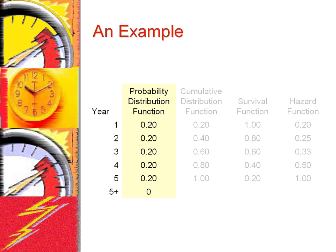An example will demonstrate. Suppose we know that a hip replacement surgery will last at most 5 years. Furthermore, suppose that in the absence of any other information, we estimate that it is equally likely for a prosthesis to fail in any of the next 5 years.